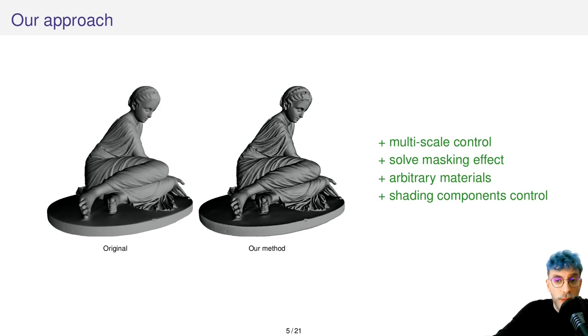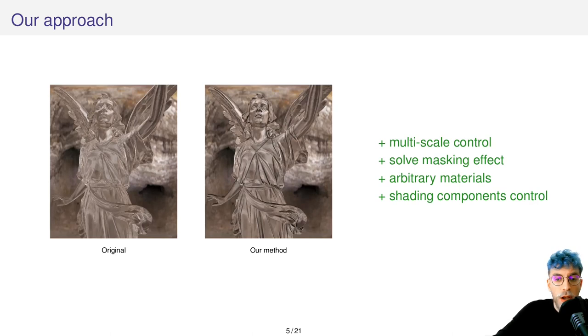Our approach, local light alignment, aims at combining all the strengths of these previous methods. We want to retain the multi-scale control from exaggerated shading but still enable the enhancement of arbitrary materials and the control of each shading component.